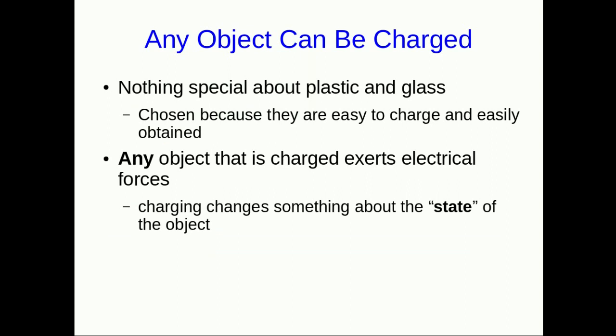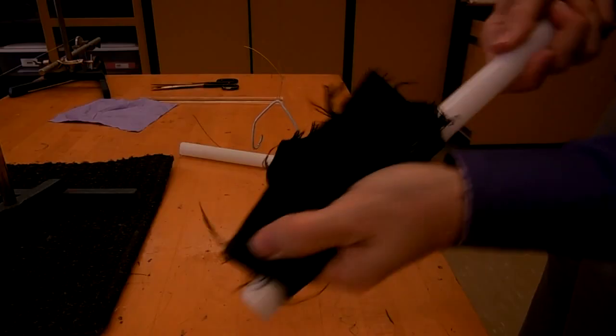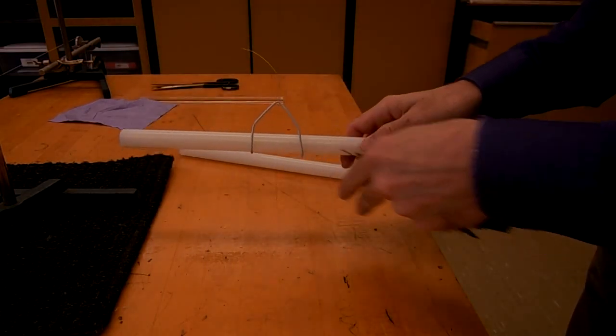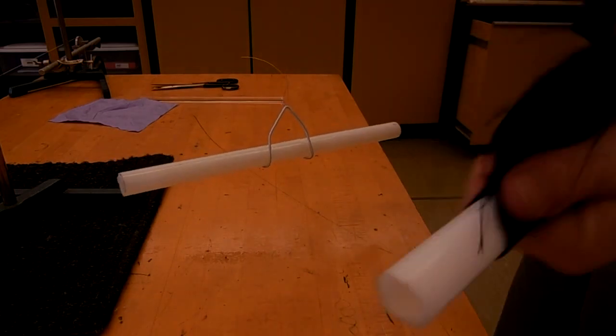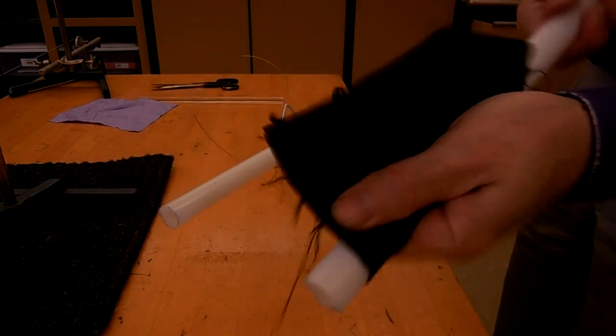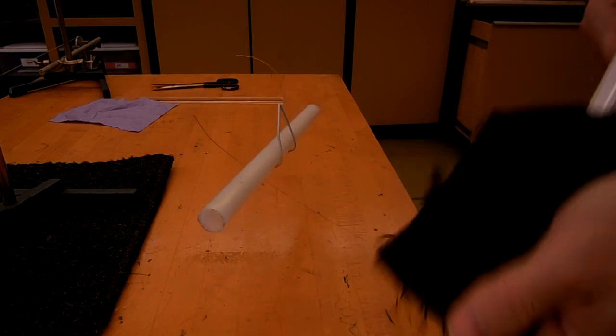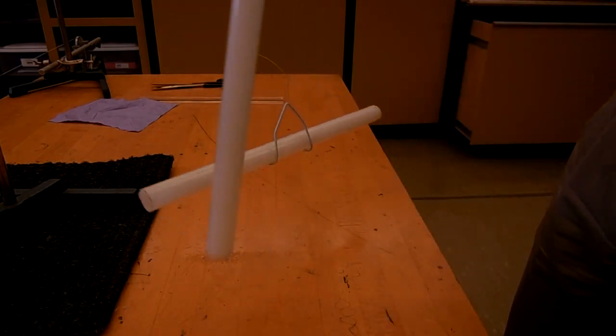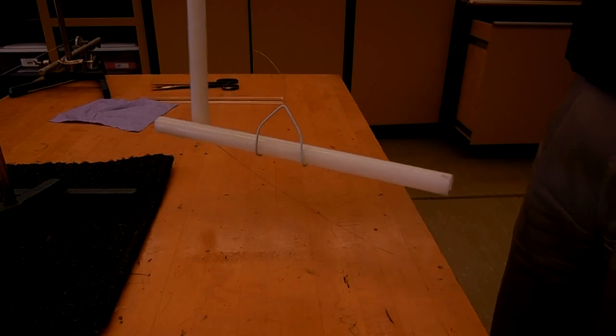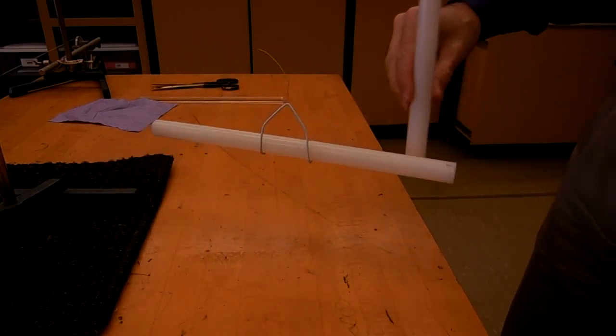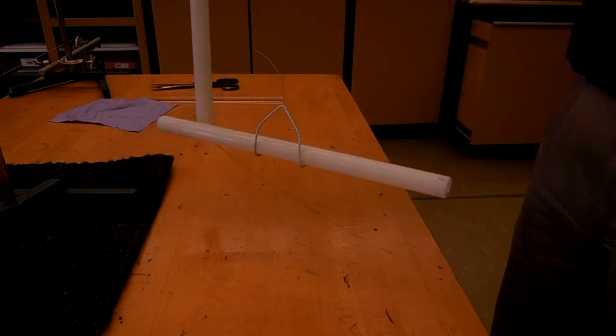Up until now, we've only looked at how charged objects affect neutral ones. But now let's start looking at charged objects and how they affect other charged objects. I've charged a plastic rod this time, and I'm putting it on the hanger. Now I'm charging another plastic rod. What we observe once it's charged is that the charged end repels the end that I rubbed on the other one.